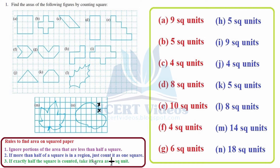Rule 2: if more than half of a square is in a region, count it as one square. For instance, only a little bit is left to be covered, so we count it as one. Rule 3: if exactly half the square is counted, take its area as half a square unit. This happens along a diagonal line, so we mark it as half.